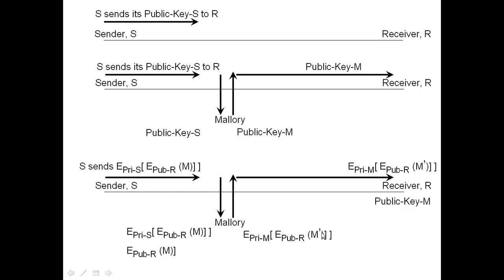However, Malorie can come up with her own message M prime, encrypt that with the public key of the receiver — which is known to Malorie — and further encrypt that with the private key of Malorie. So the message is changed from M to M prime. Malorie sends this to receiver R. The receiver decrypts this using the public key of M, but the receiver thinks it was encrypted with the private key of S.